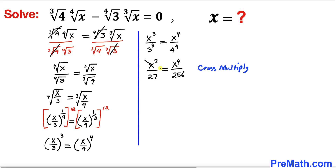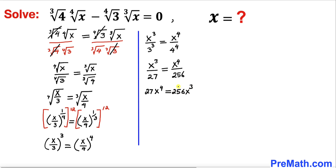Now let's cross multiply both sides, giving us 27x⁴ equals 256x³. Moving the right hand side to the left, this equation becomes 27x⁴ minus 256x³ equals zero.